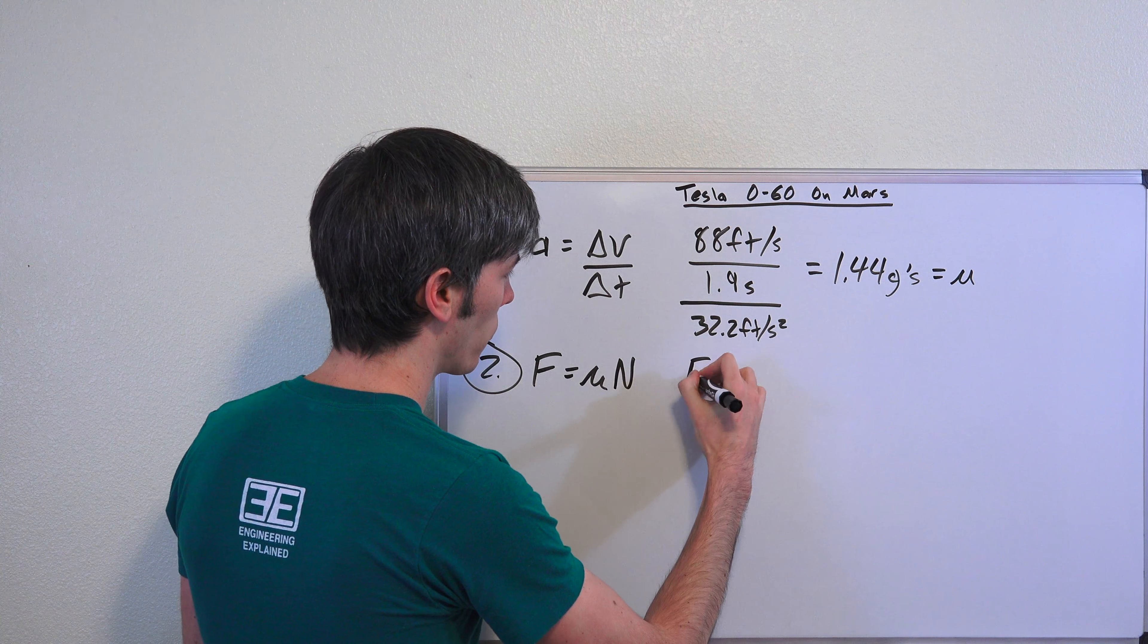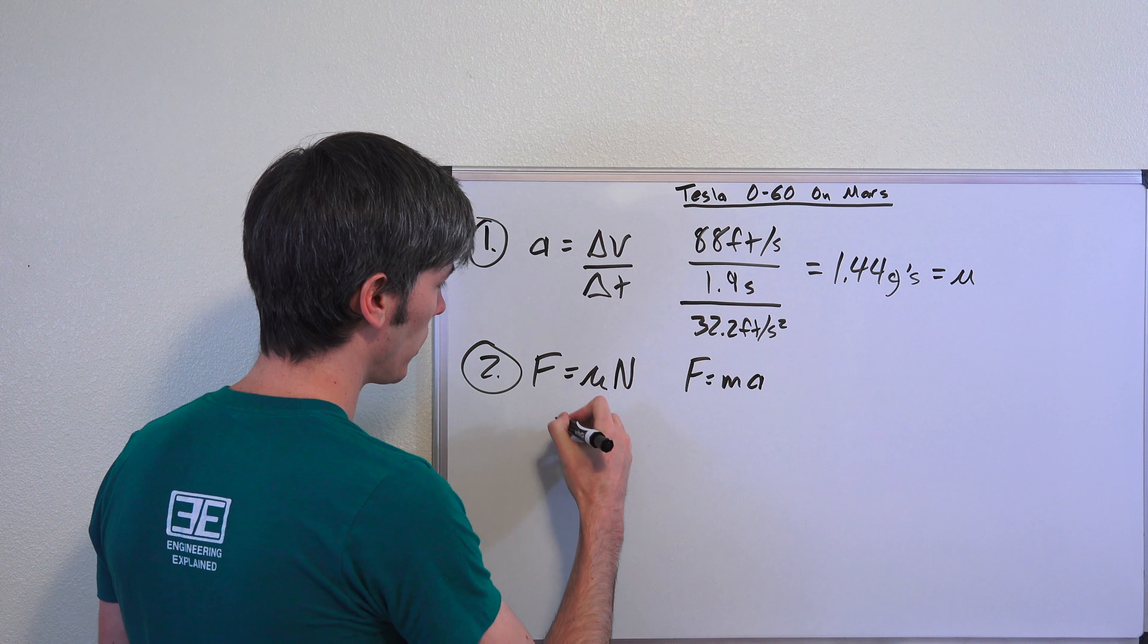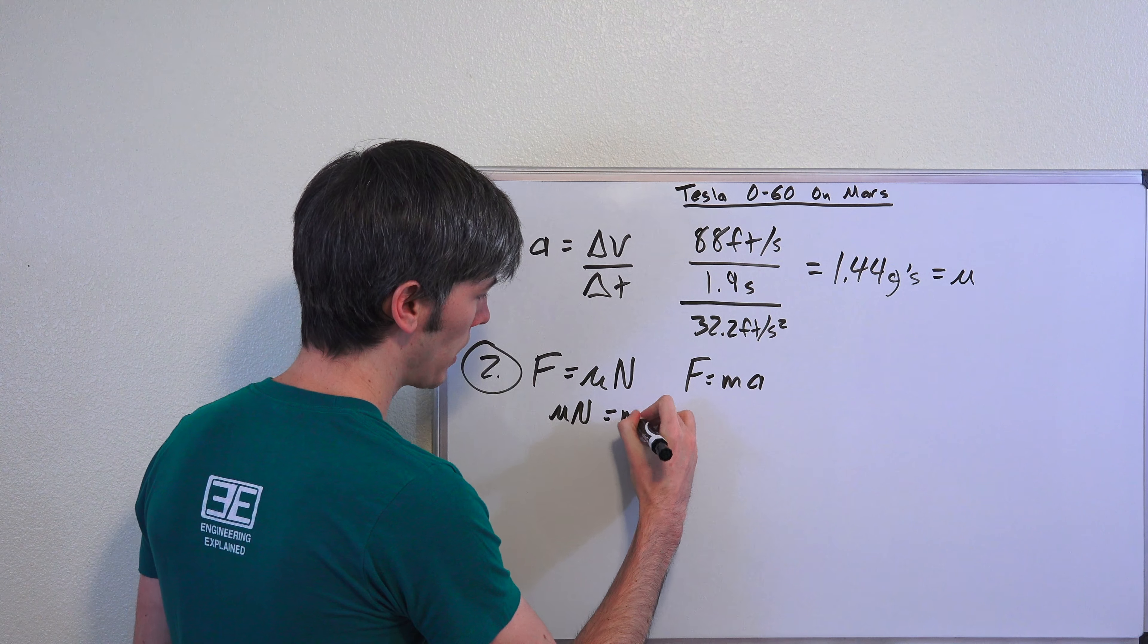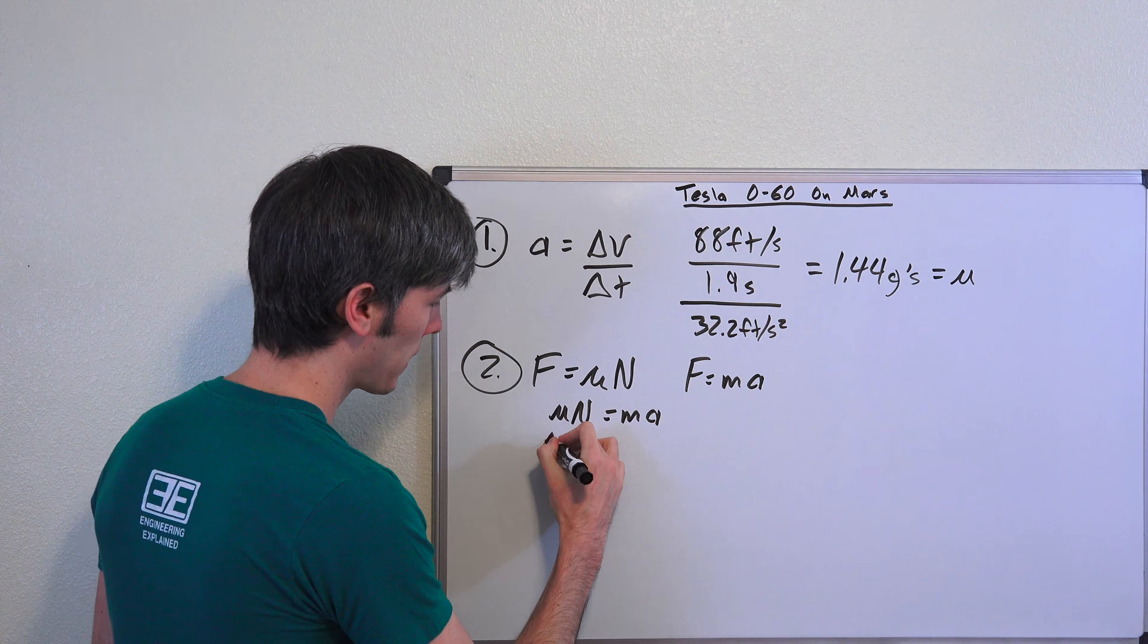Okay, well we know that the maximum force a vehicle can accelerate with is equal to the frictional coefficient multiplied by the normal force over the driven tires. We also know that force is equal to mass times acceleration. So we can set both of these equal to each other. So μN equals ma.